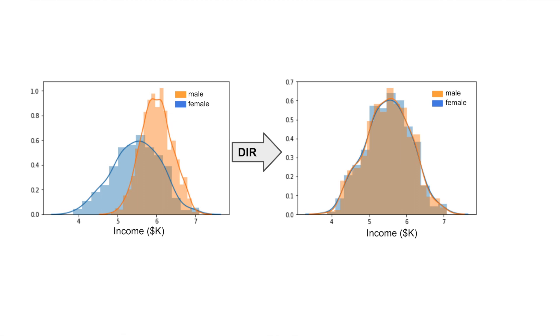Disparate impact removal works by modifying features so the distribution for the privileged and unprivileged groups becomes similar. Here we can see how the income distributions for males and females have been modified. It works by maintaining the rank order within the different groups — if you were the highest earner in the privileged group, you remain the highest earner in that group. Only the rank order between the two groups is affected, so we can no longer use the feature to distinguish between the two groups, while retaining some of the feature's ability to predict the target variable.